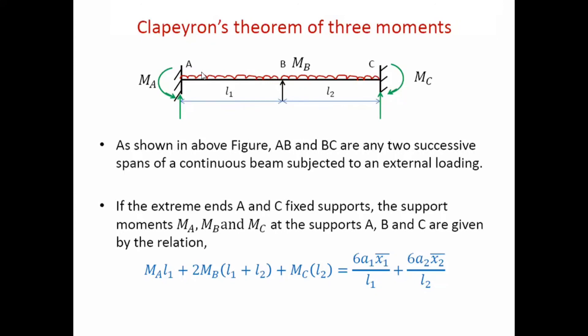You have to do this for both spans L1 as well as L2. Those areas under the bending moment diagrams will be a1 and a2 respectively, and their centroidal distances from respective supports will be x1 bar and x2 bar.